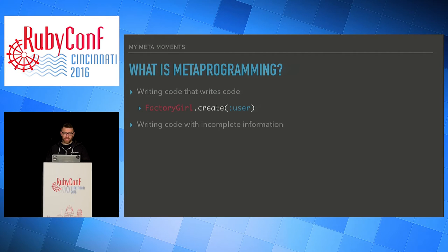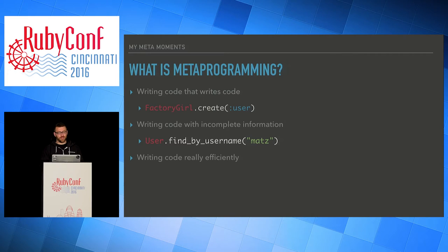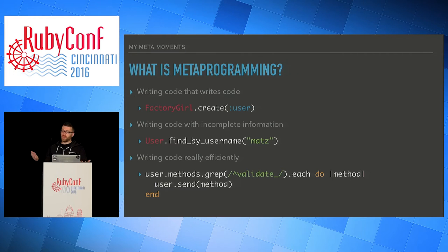It's also writing code with incomplete information. For example, if you've ever used one of these Rails magic methods like find_by_column_name, the way that is implemented is with imperfect information, and we'll explain that later. Finally, writing code really efficiently: if we take a user, get all the methods on the user, look for all the methods that begin with 'validate', and then use send to call those methods — these three lines can actually call a ton of lines of code without having to know what methods we're even calling.